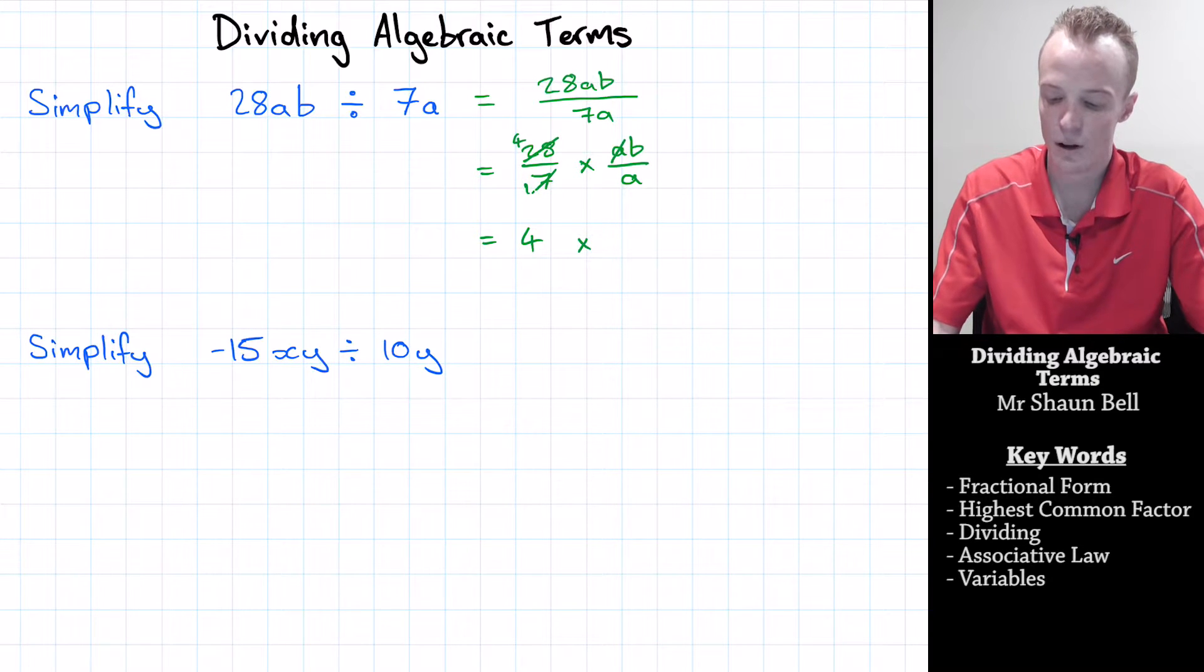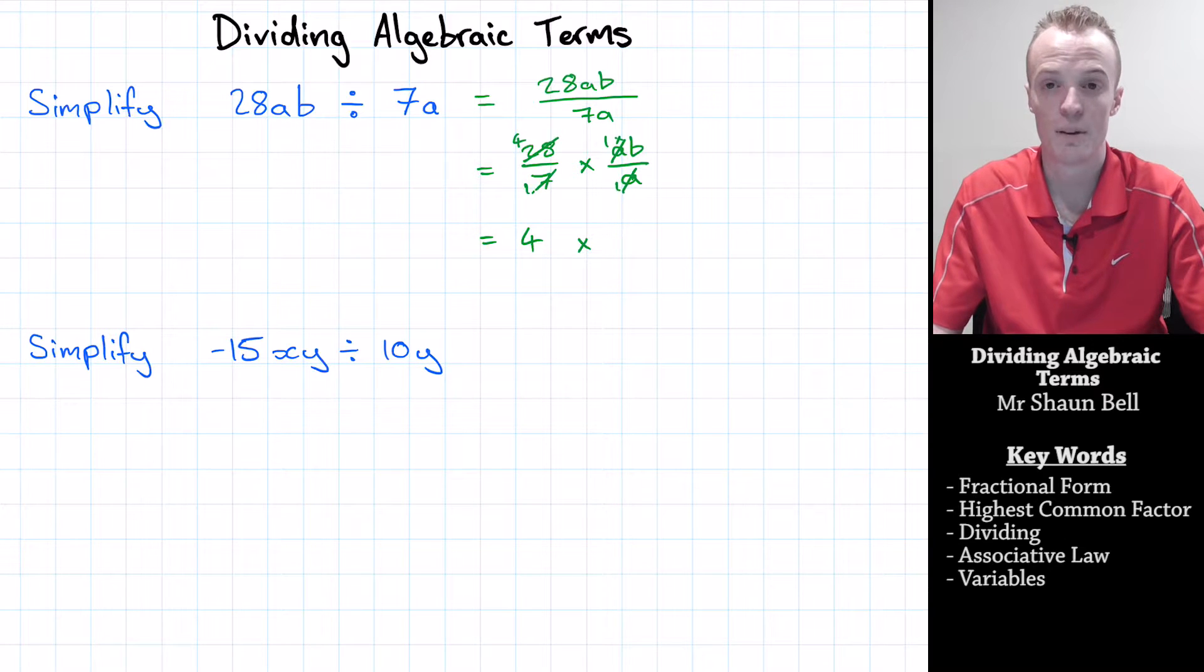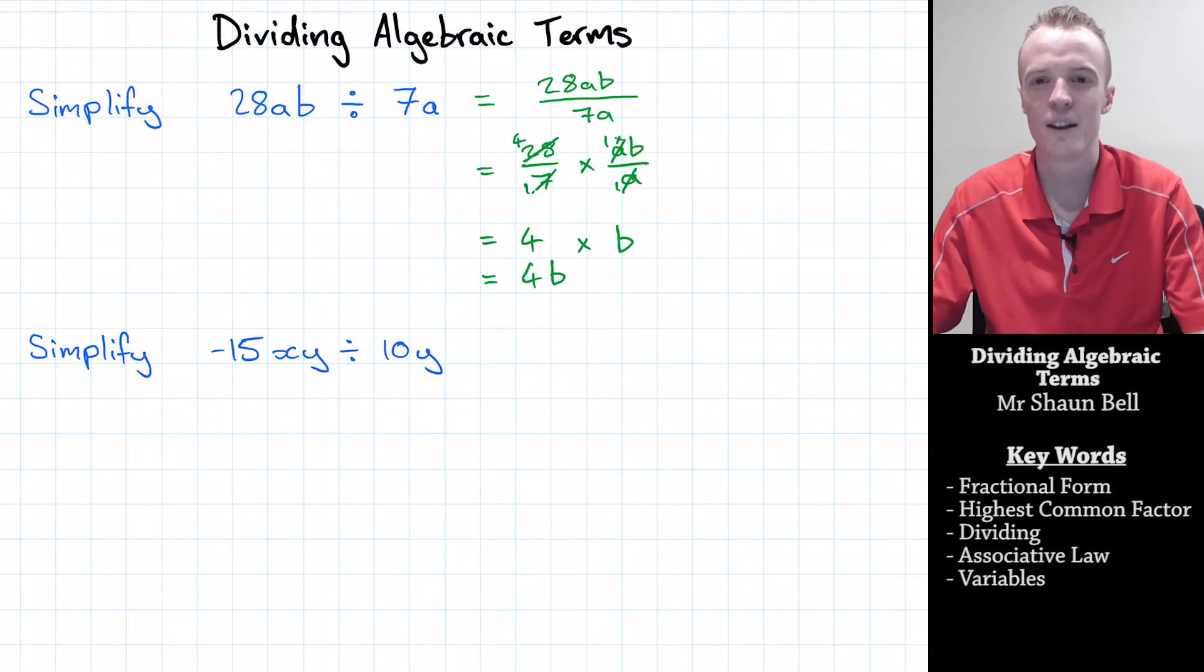Now the other fraction here, we notice that a is a common factor to both. a divided by a is going to be 1 over 1. So what we're left with on the top is 1 times b, and that's divided by 1, so we're just left with b. So it's equal to 4 times b. But of course we can represent 4 times b as 4b. So our final answer is 4b.